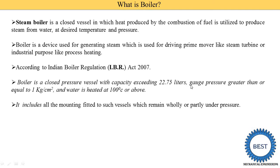So the capacity of water in a boiler is 22.75 liters, the pressure is greater than or equal to 1 kg per centimeter square, and the temperature is 100 degrees centigrade or above. This boiler is fitted with all the mountings, which are compulsory for all types of boilers to be installed for safety purposes.